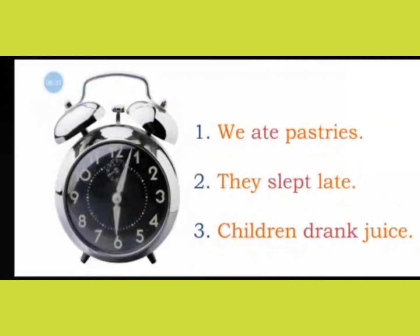Here you can see the verbs in red. Now if you look at the clock, the time is something like 6, 3 or 4 p.m. When we talk about pastries, we ate pastries around 4 p.m., so that is before 6 p.m. — the action is over. Second, they slept late, maybe yesterday. And third, children drank juice around 3 p.m., or children drank juice in the afternoon.